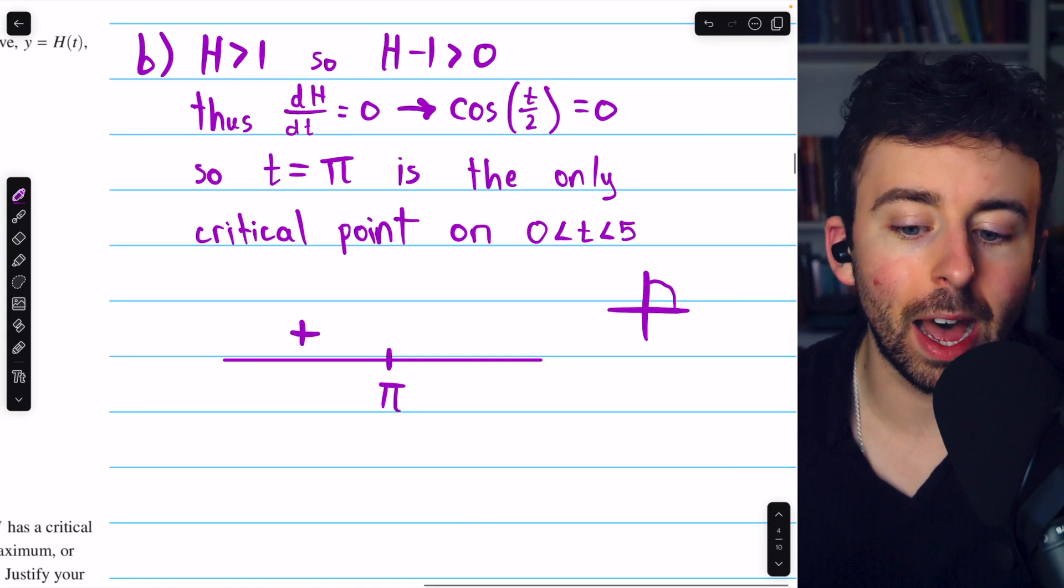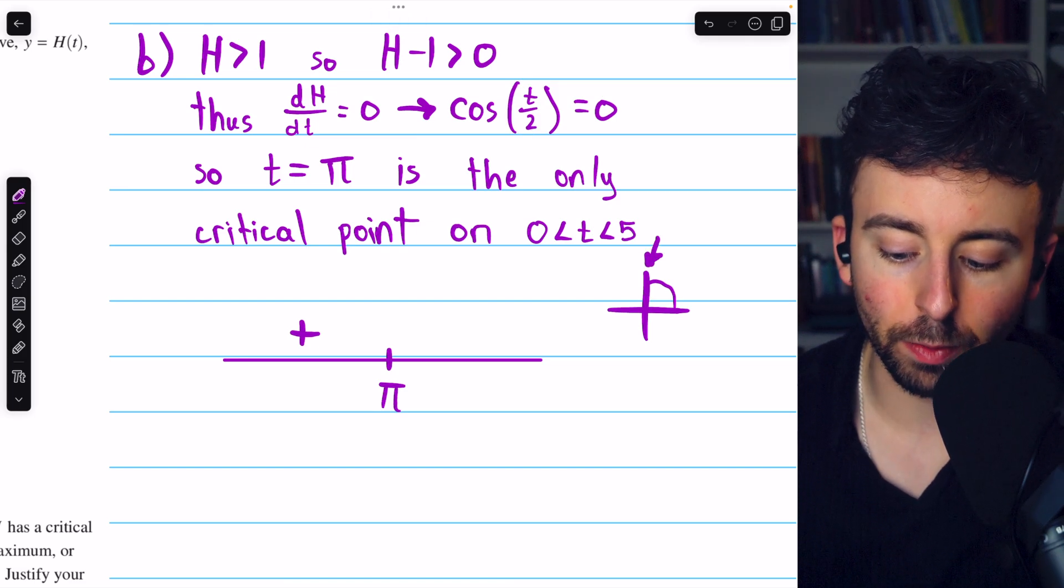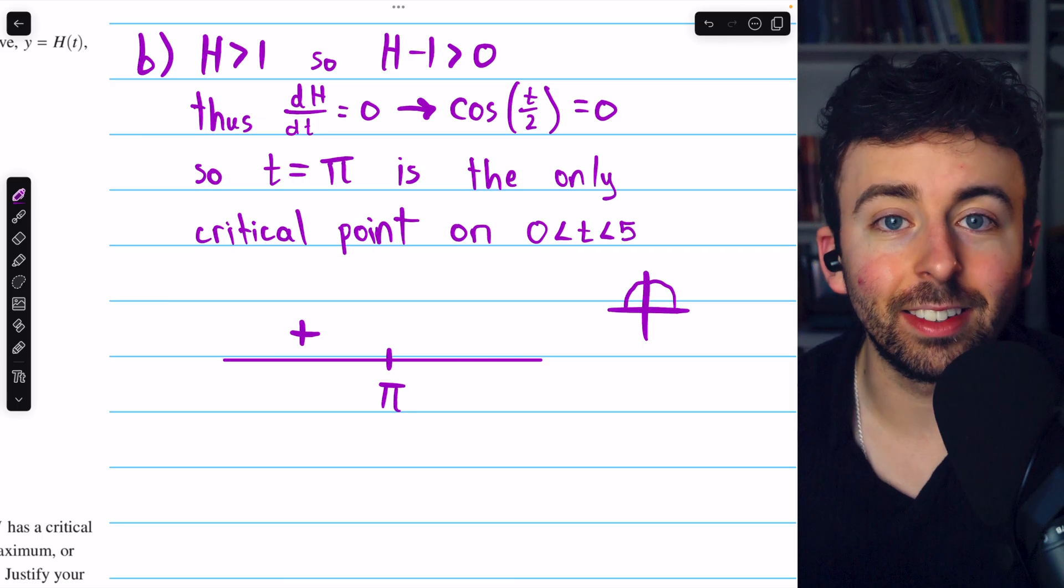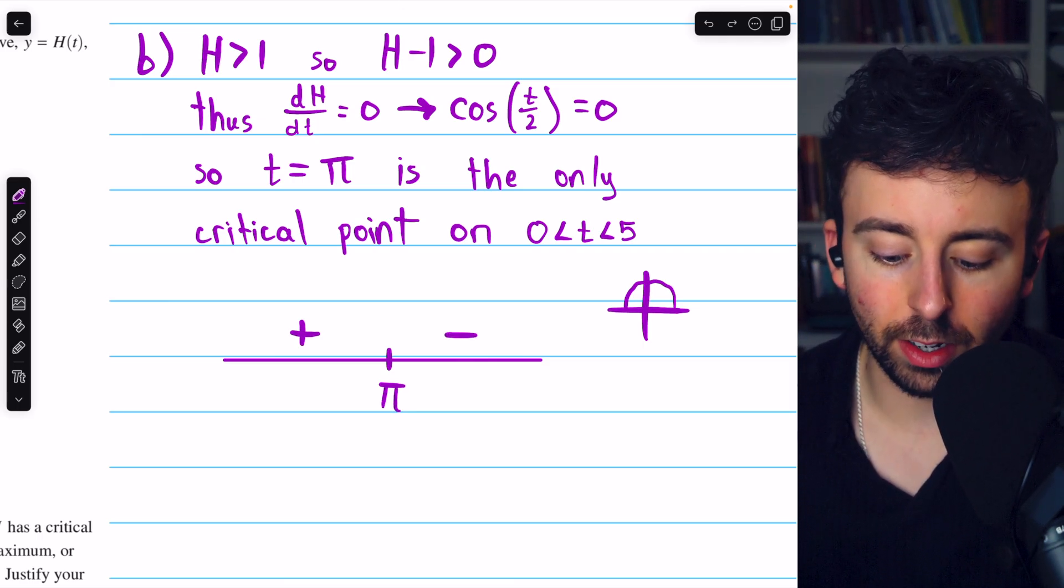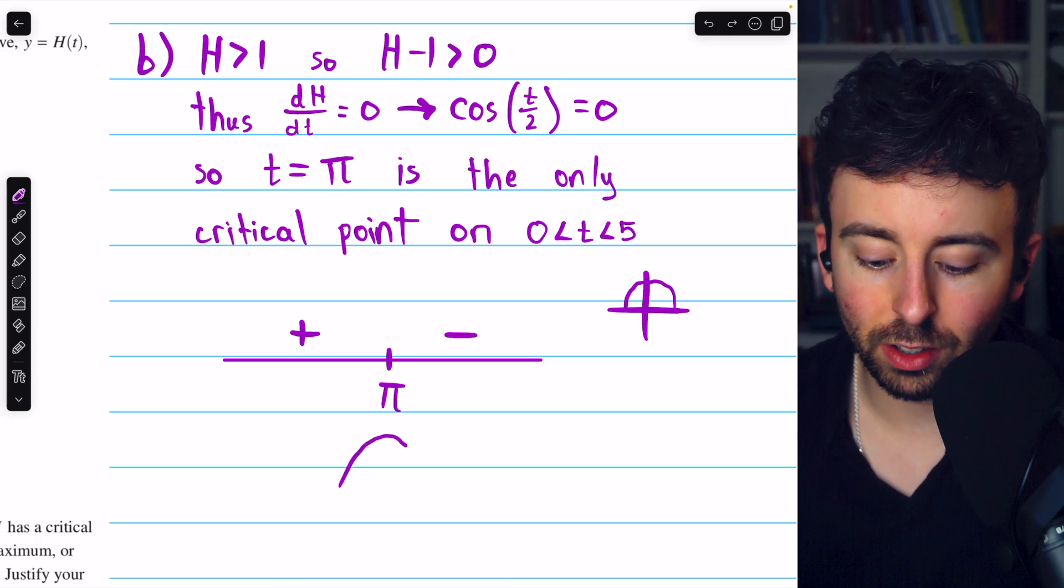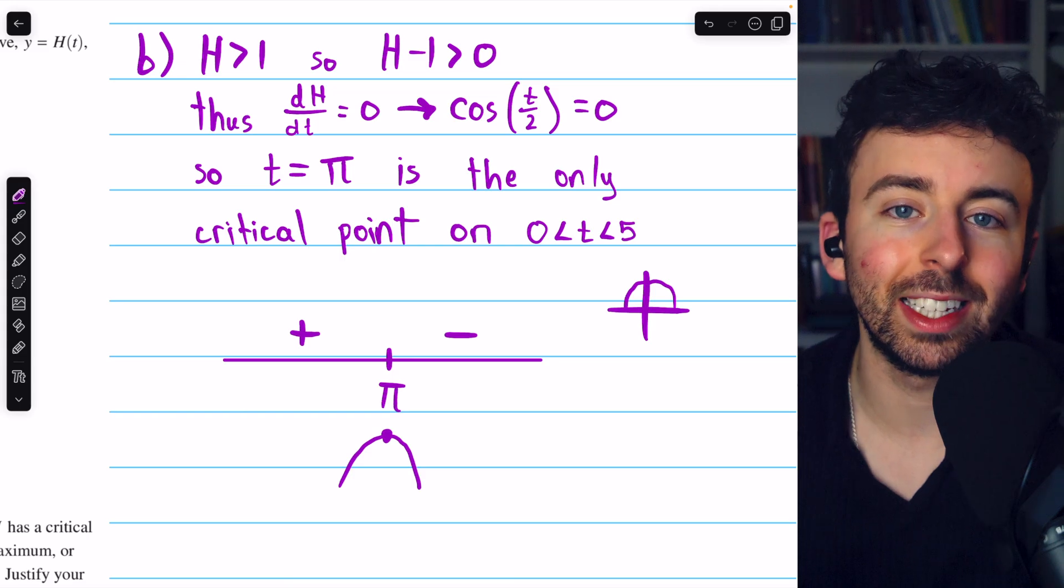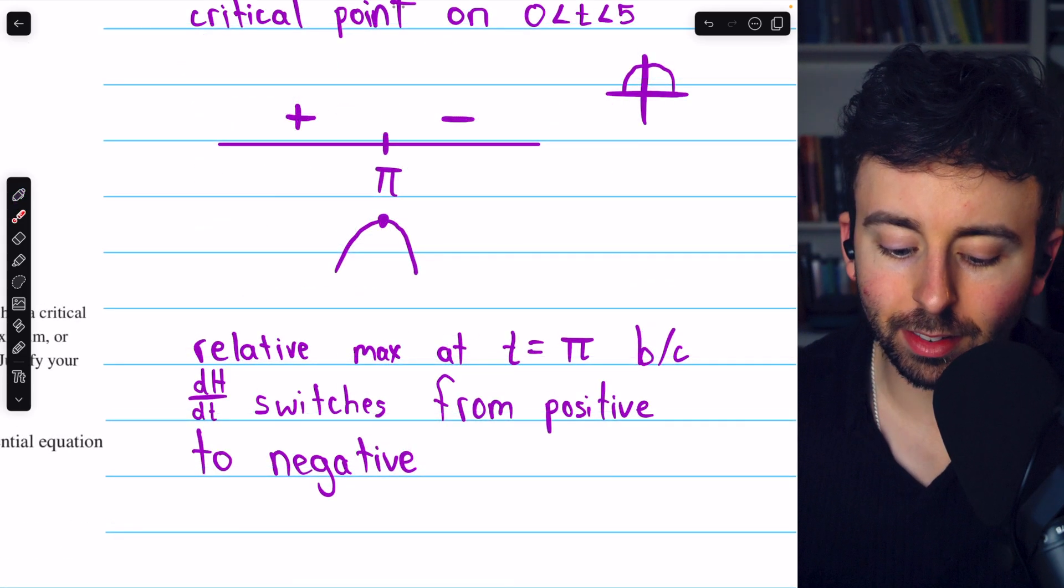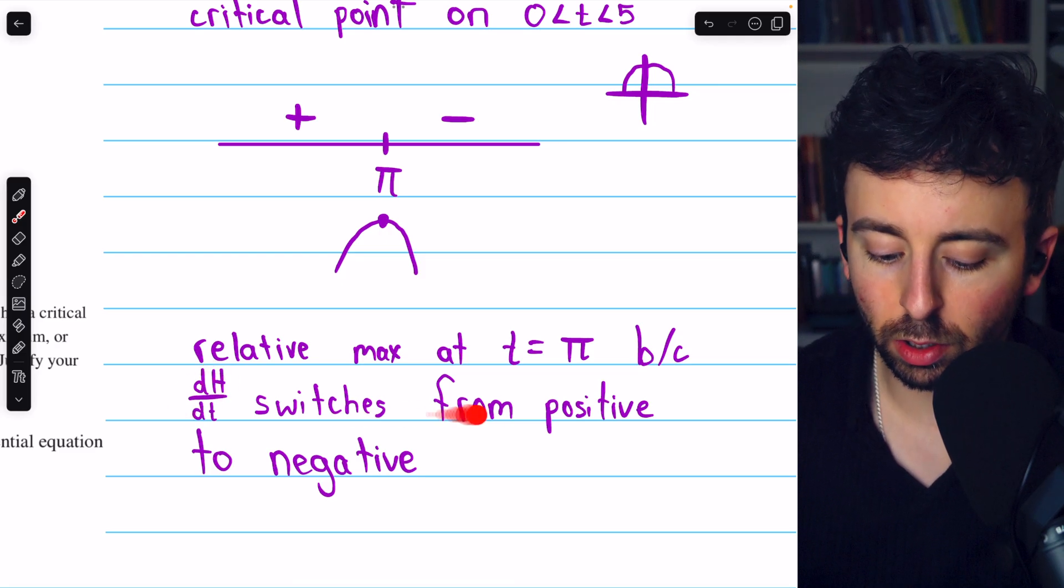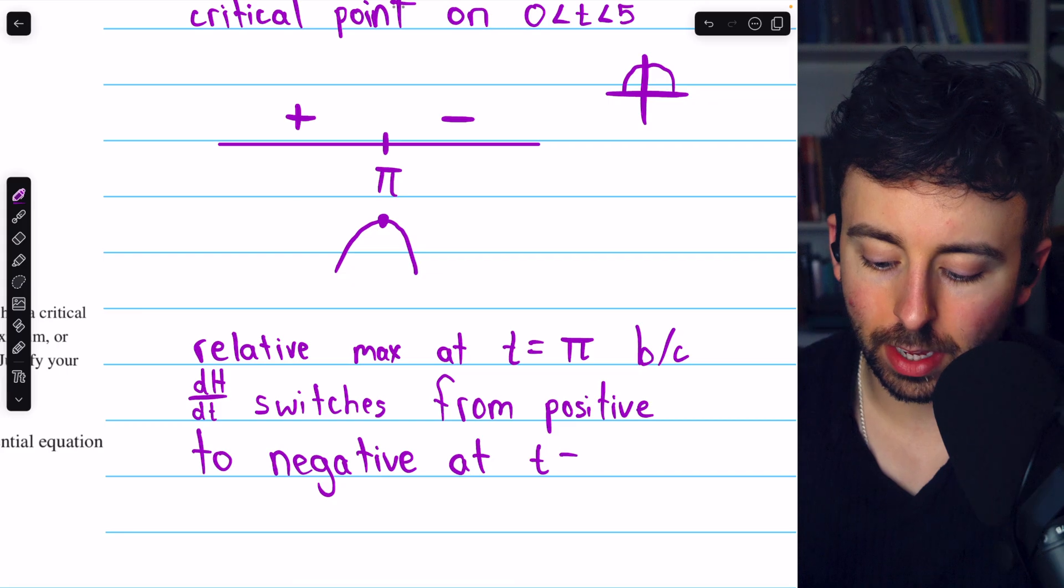Once t passes π, the input t/2 passes π/2, and so now we're over here, where x is negative, and so the sign of the derivative would be negative. Hence, the function switches from increasing to decreasing, so at t equals π, we have a relative maximum. There's a relative max at t equals π, because the derivative dh/dt switches from positive to negative at t equals π. That completes part B.